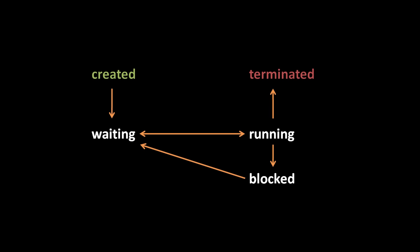So, don't get confused. Both the blocked and waiting states involve waiting, but only in the waiting state will the scheduler select the process to run. In the blocked state, the process waits until the OS puts it back in the waiting state.